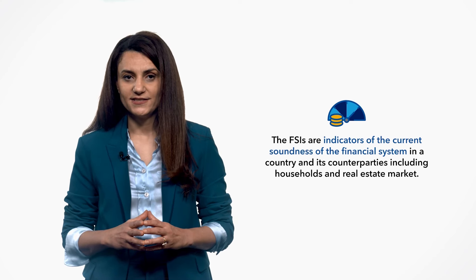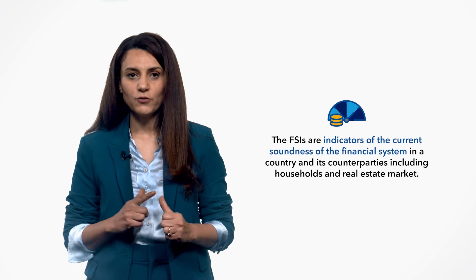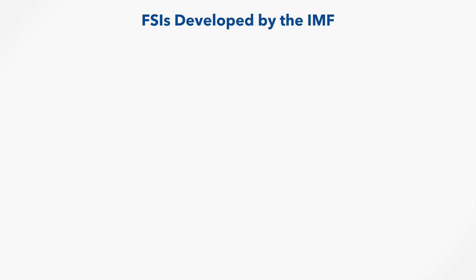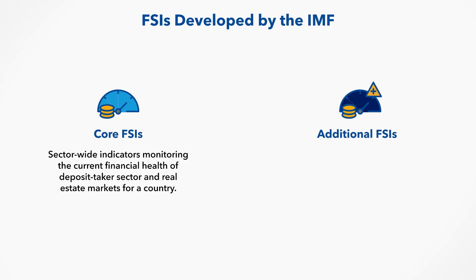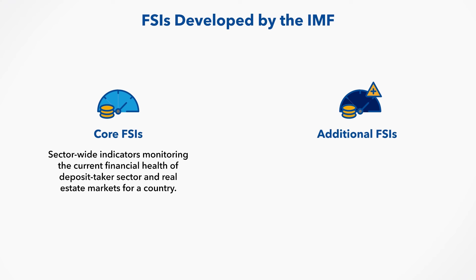The financial soundness indicators or FSIs are a relatively new set of economic statistics. The FSIs were developed by the International Monetary Fund in the late 1990s. The FSIs are indicators of the current soundness of the financial system in a country and its counterparties, including household and real estate markets. The FSIs developed by the IMF are grouped in two different sets: the core FSIs and additional FSIs. The core FSIs are sector-wide indicators monitoring the current financial health of the deposit taker sector and real estate markets. The additional FSIs provide further details on the deposit taker sector and real estate markets, and also provide insights into other financial and non-financial corporations and household sectors.